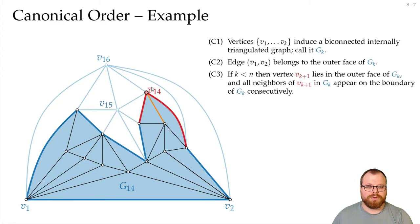Now we can pick v14, the outer face is still a simple cycle, the neighbors are consecutive, it's fine. We pick v13, we remove it, and now we have a problem.